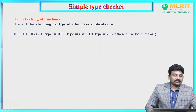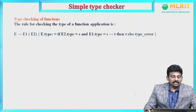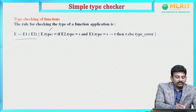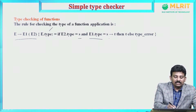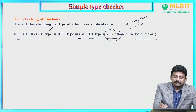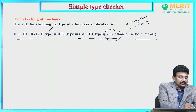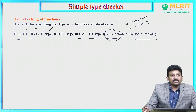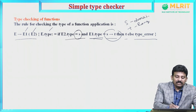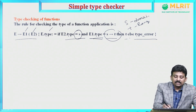Then, type checking of functions. The rule for checking the type of a function application: E derives E1(E2). E.type = if E2.type is s and E1.type is s→t, then t, else type_error. Here s is the domain and t is the range. The function E1 takes an argument from the domain represented by expression E2. If E2.type is s (the domain) and E1.type maps s to t, then the return type is t; otherwise type_error. Thank you.